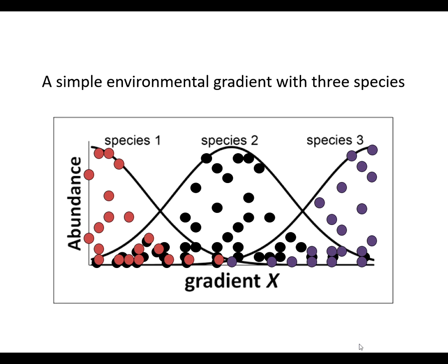For example, a single gradient transitioning from species 1 to 2 to 3. Each point represents the abundance of a species at a point on the gradient.